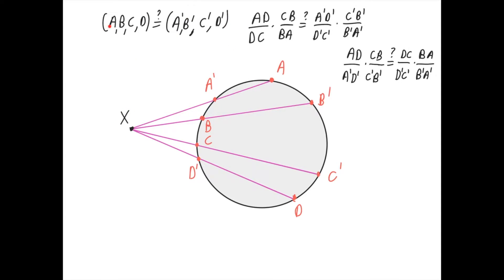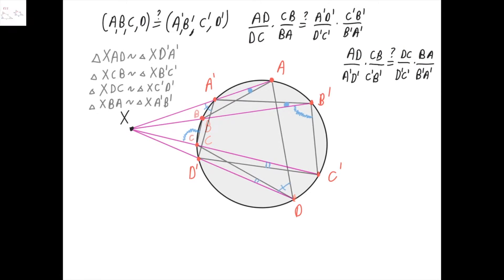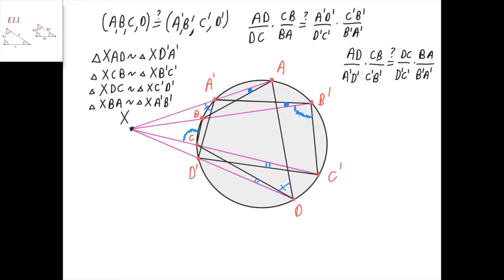To prove this statement, we're going to need to show that the cross ratio of a, b, c, and d — which is AD divided by DC times CB divided by BA — equals the cross ratio of a prime, b prime, c prime, d prime — which is a prime d prime divided by d prime c prime times c prime b prime divided by b prime a prime. By rearranging the terms in this equality, we get this equality which we need to prove. To prove this statement, we're going to use some similar triangles. I've listed four pairs of similar triangles right here.